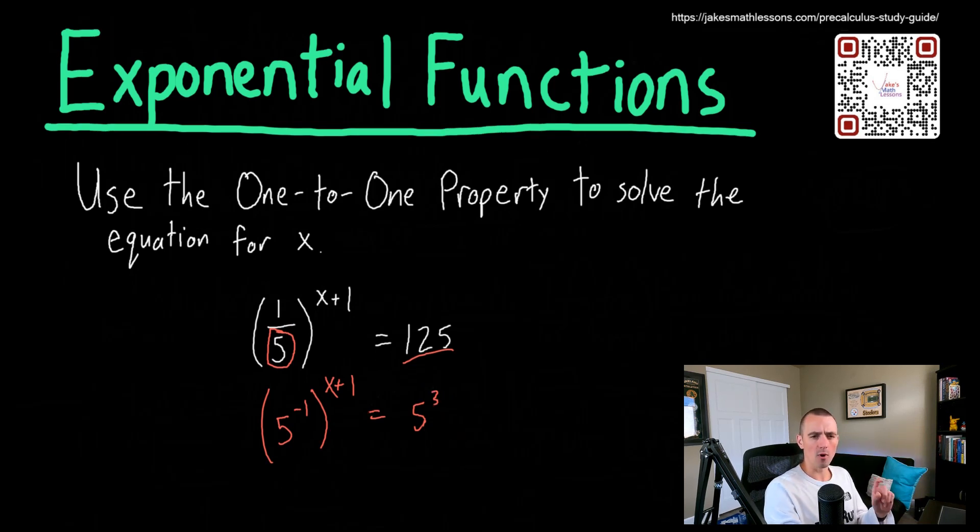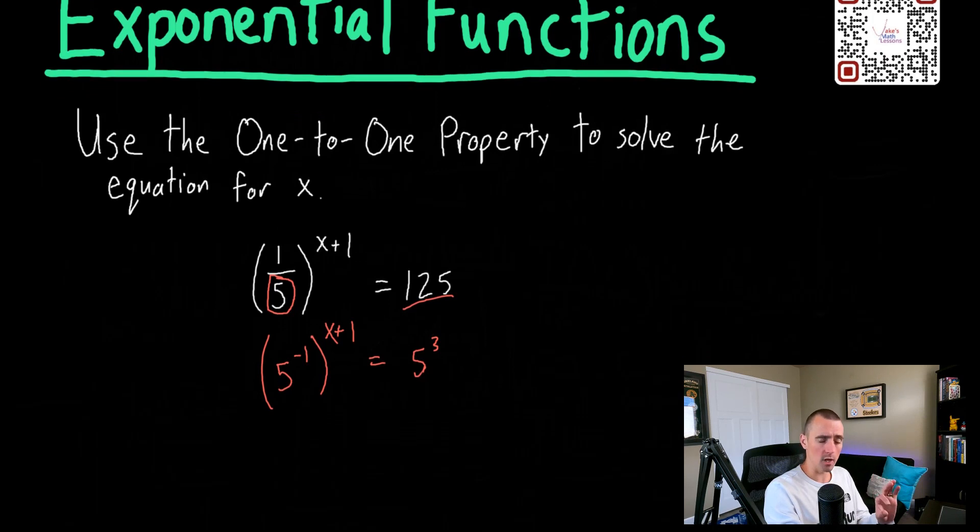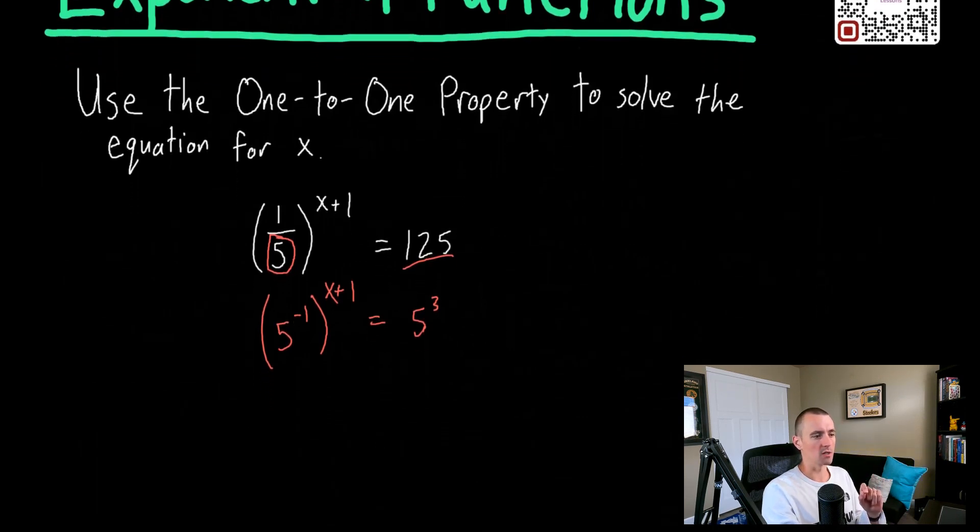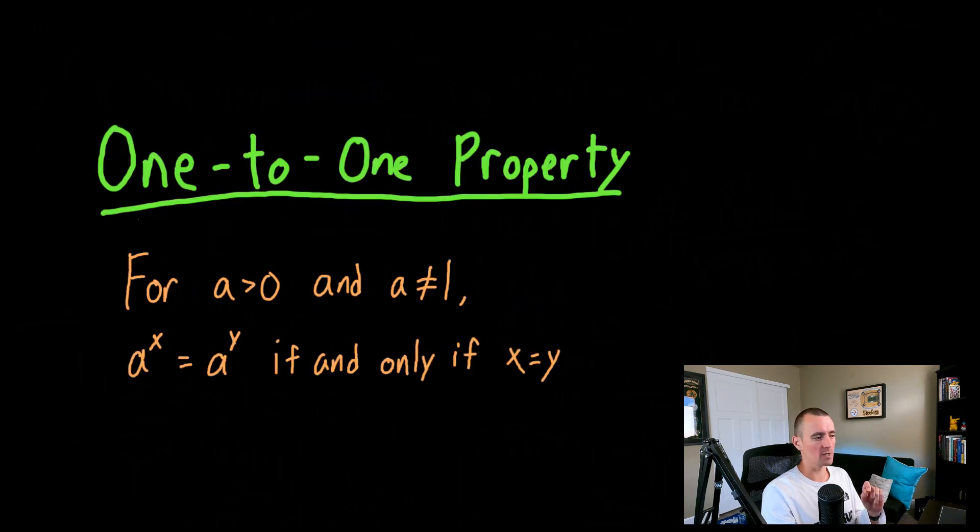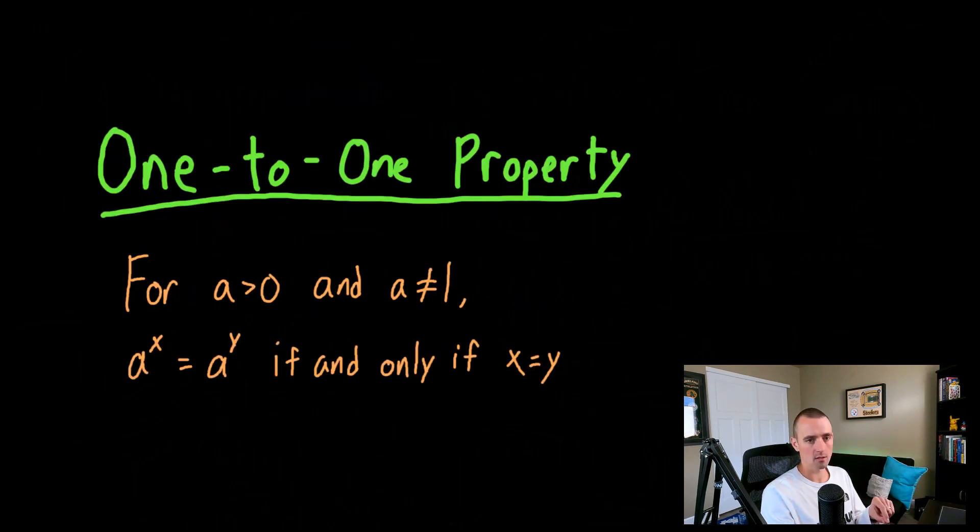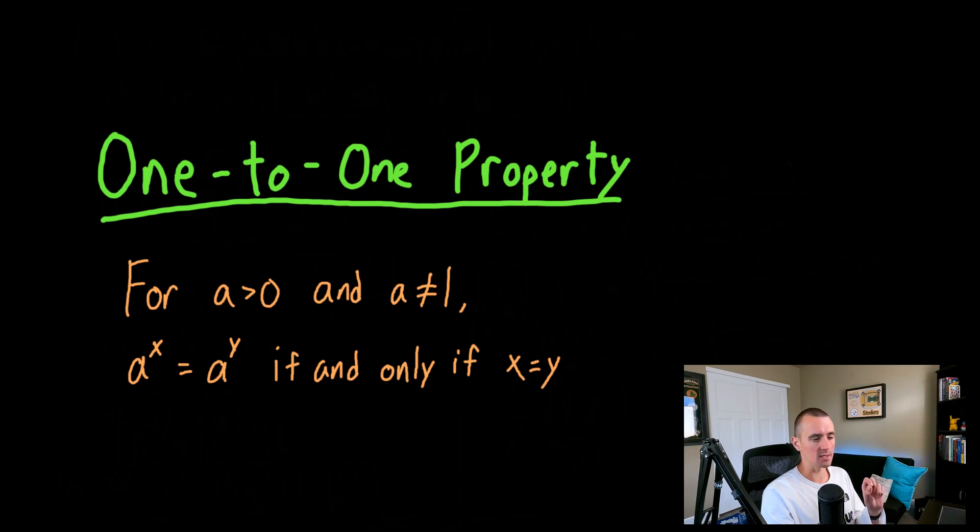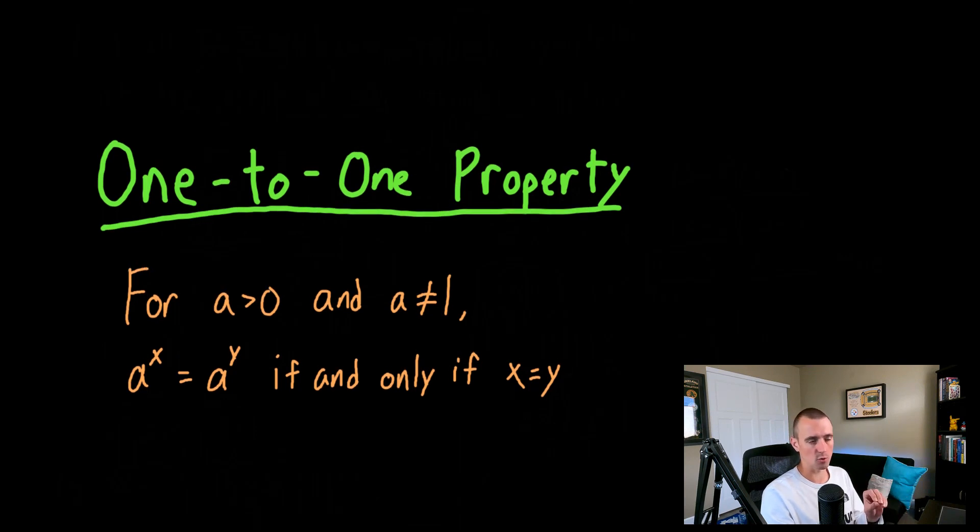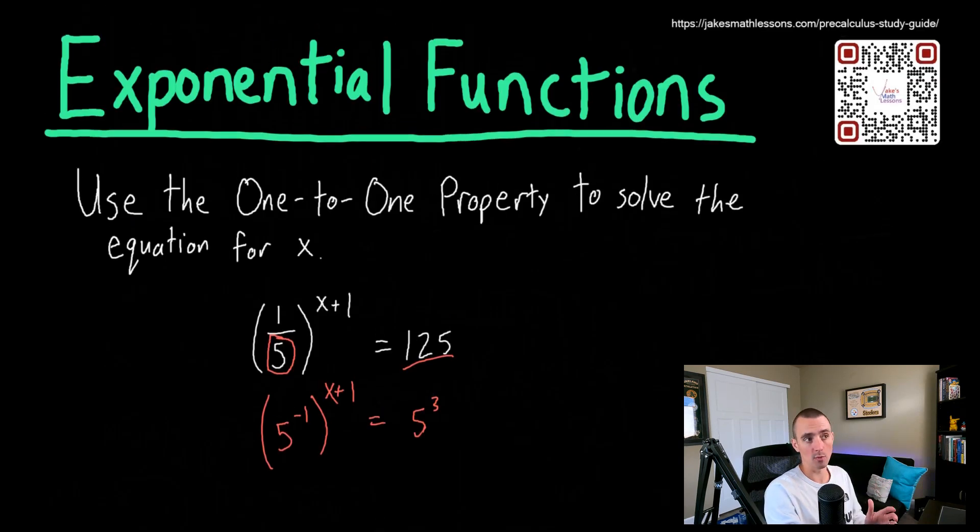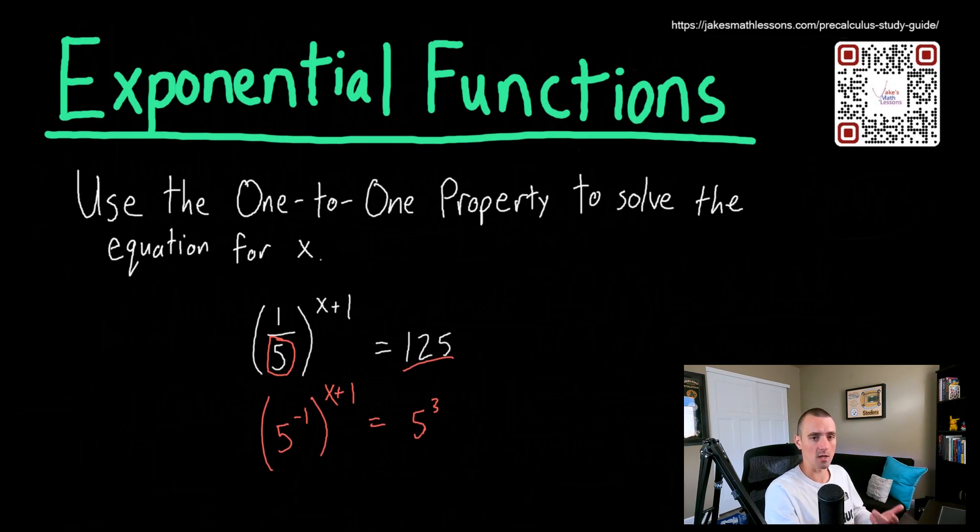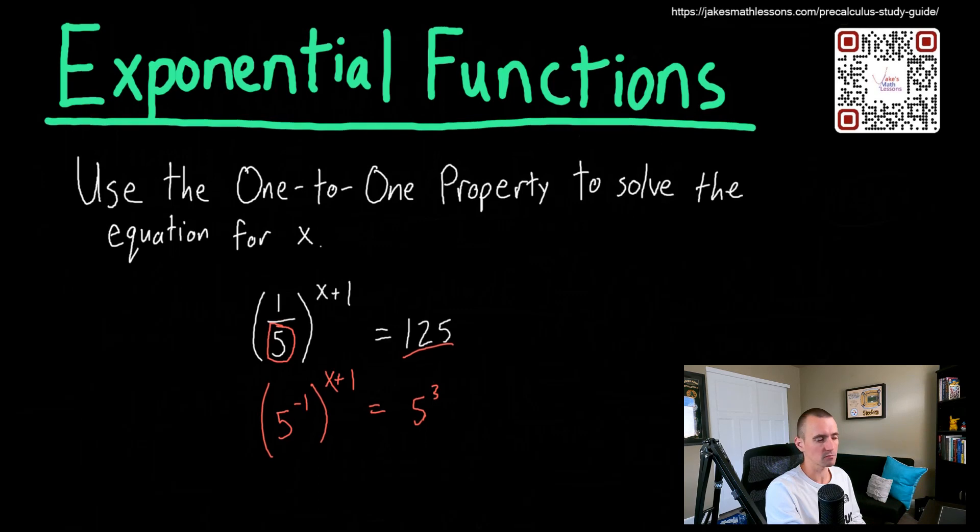So now we're not quite done yet. We can't quite apply the one-to-one property quite yet, because remember, what the one-to-one property said, we need to get just a to the x, a to the y. We need the same exact base raised up to a power. Once we just have a base to a power on both sides of our equation, assuming those two bases are the same, then we can use the one-to-one property. So we need to think about how we can rewrite this left side of our equation now to just be five raised up to some power.